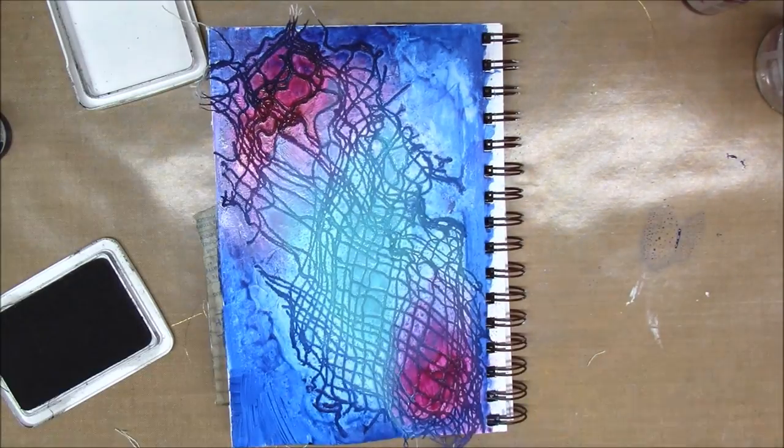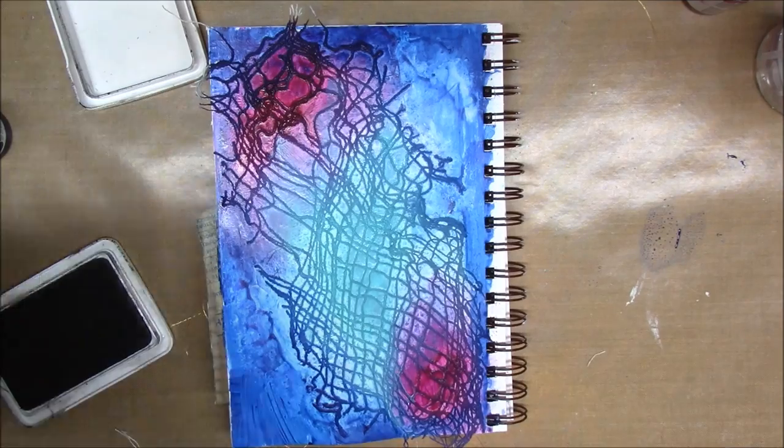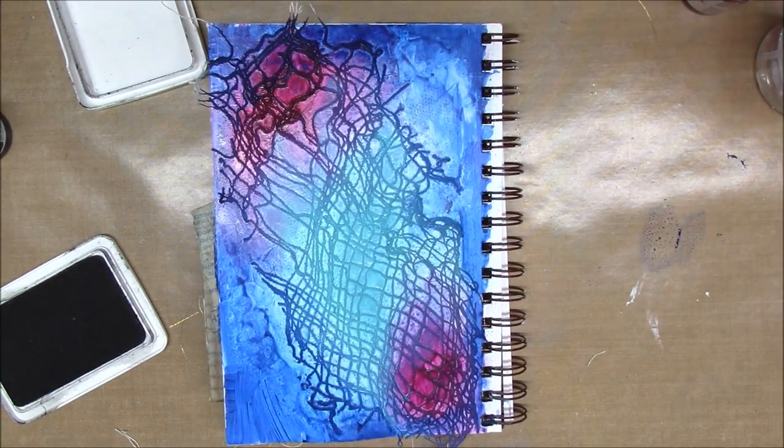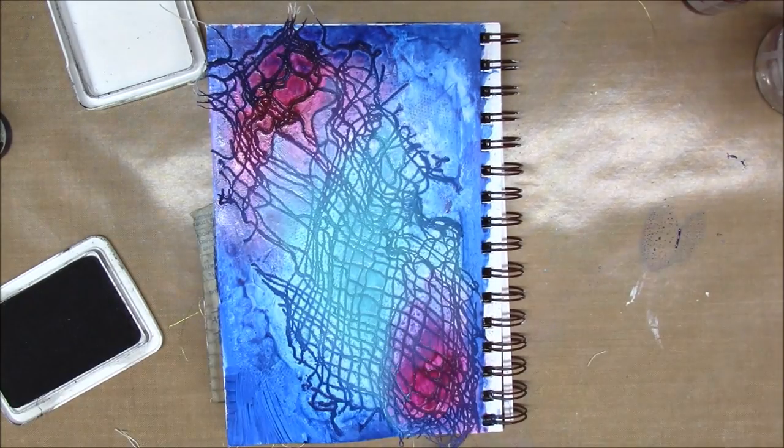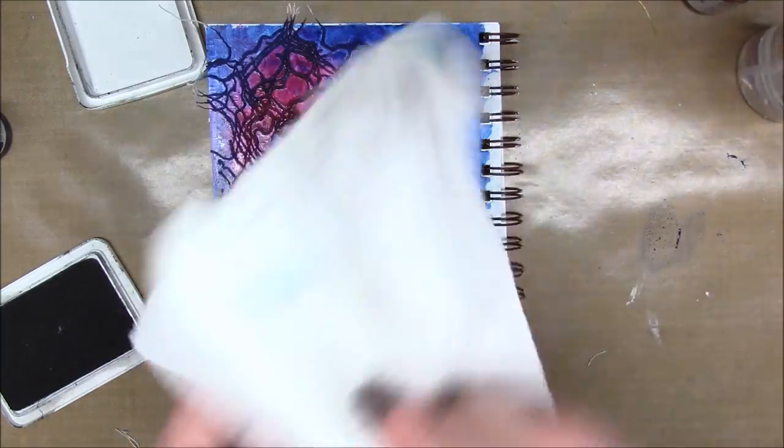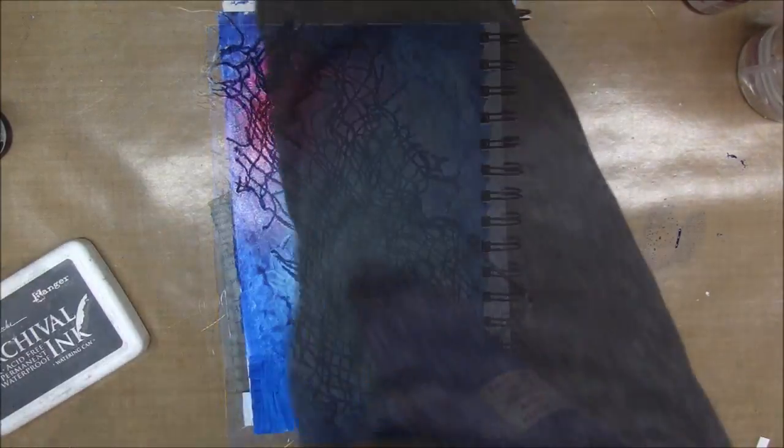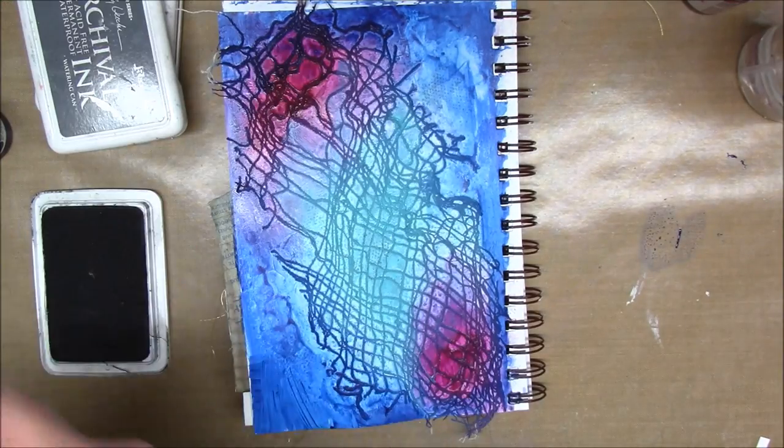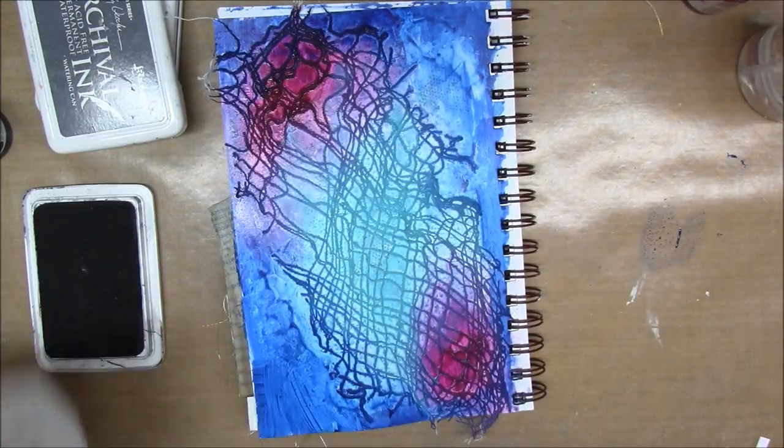Now I have a mesh texture stamp from Viva Las Vegas stamps and I'm using some watering can archival ink, which is a gray color. You can't really see it and my paint wasn't really dry so as I was stamping the paint was getting on my stamp.